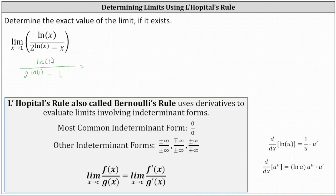Simplifying, natural log one is equal to zero, so we have zero divided by — in the denominator, natural log one is zero, two to the zero is one, and one minus one is zero. By performing direct substitution, we have the indeterminate form of zero divided by zero.